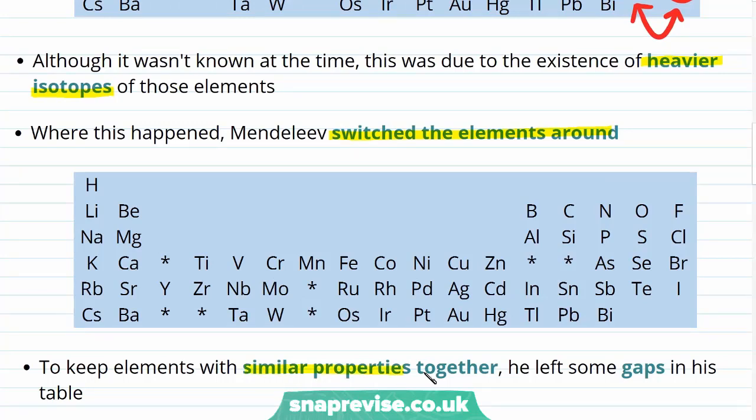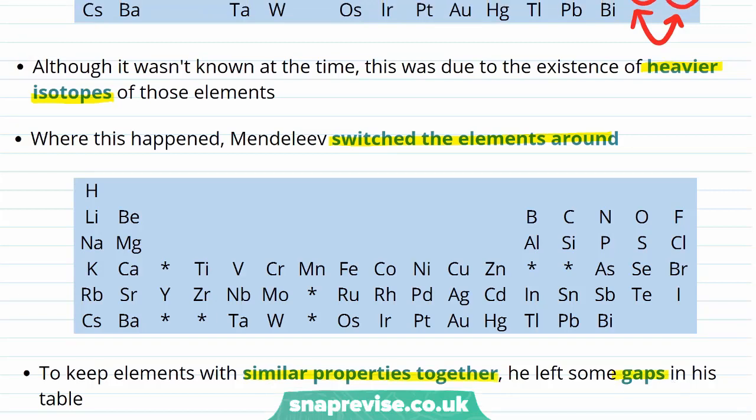In order to keep elements with similar properties together, he left some gaps in the table. And the gaps left by Mendeleev in his periodic table can be seen by stars in this diagram.